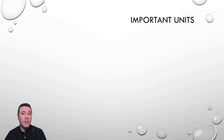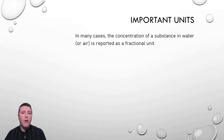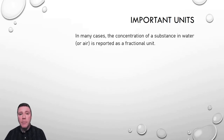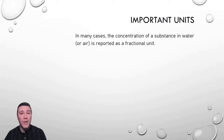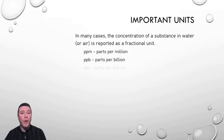Before we explore how the toxicity of a substance is determined, let's first look at how its presence in the environment is quantified. We are all familiar with fractional units such as percent — 78% of the atmosphere is nitrogen gas. But when it comes to pollutants and toxins, the concentrations found in the environment are generally too low to use a unit as large as percent, which is part per 100. Instead, we use units such as parts per million, parts per billion, and even parts per trillion.